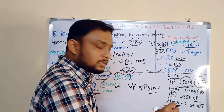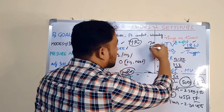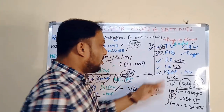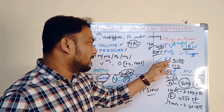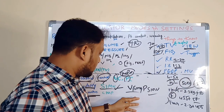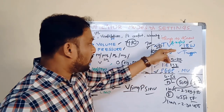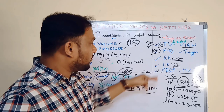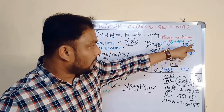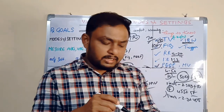In volume SIMV — focus on tidal volume, respiratory rate, and all these parameters. In pressure SIMV — forget about the tidal volume, focus on pressure and all these things.